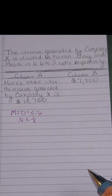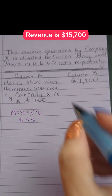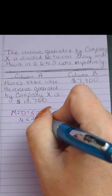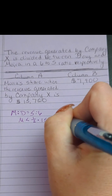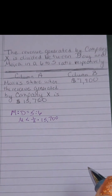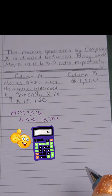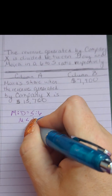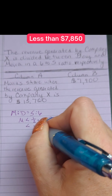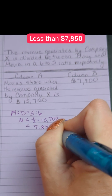So logically, that means Moira is going to have less than half of whatever the revenue is. In this case, our revenue is $15,700, so she's going to have less than half of that amount. This is a great little calculator moment — use your on-screen calculator and you'll find that Moira is going to make less than $7,850.